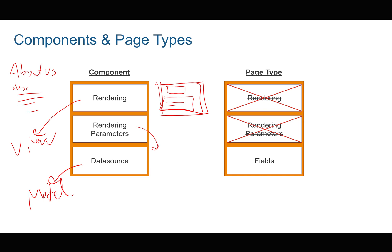Page types, however, are completely different in that a page type doesn't actually have a rendering at all. Since it doesn't have a rendering, it doesn't have rendering parameters either. So it really doesn't have a view — it's only a model that has a set of fields.